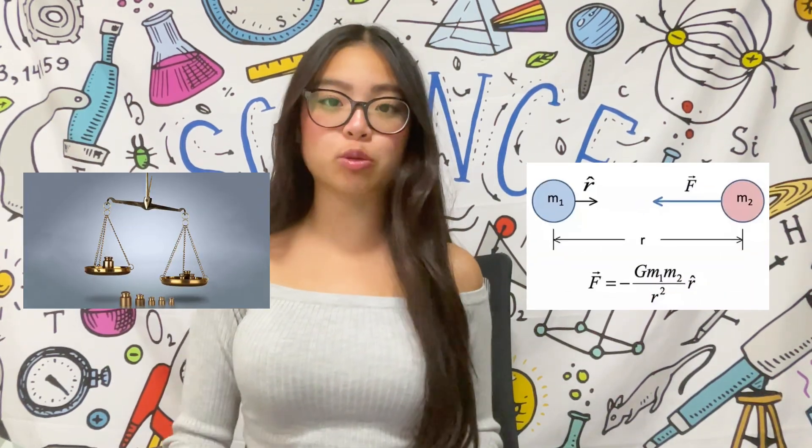Both objects have mass, and they exert attractive forces on each other, causing the earth to stay in orbit. Newton's model also tells us that the gravitational forces between two objects depend on their mass and the distance between them.